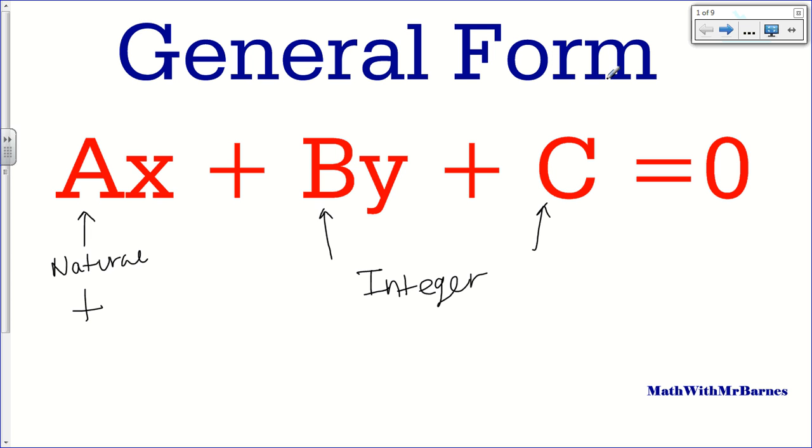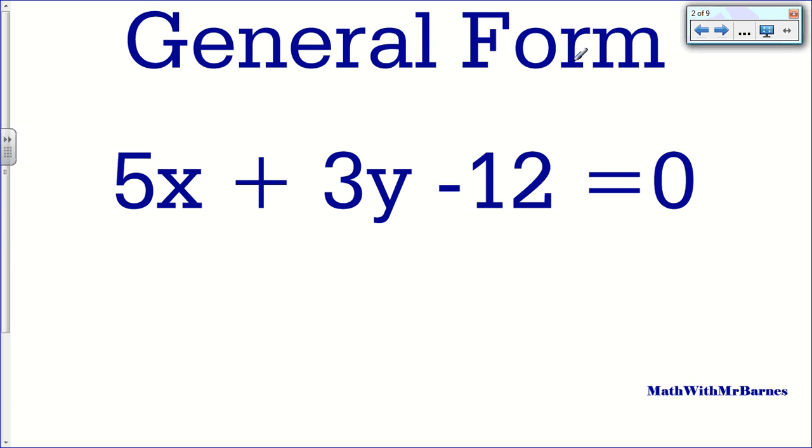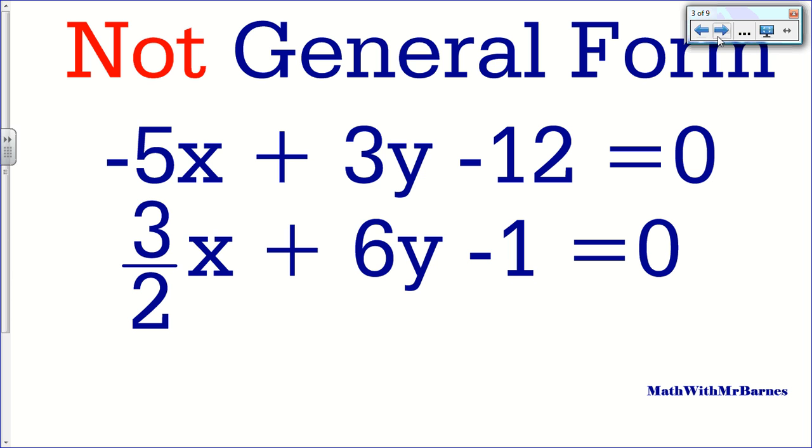Alright, so let's have a look at a few different examples of something that is general form and something that is not general form. So this guy is general form. The leading number in front of my x is positive and it's not a fraction or a decimal. And the other two are not fractions or decimals but one of them is negative, that's no big deal. And then it equals zero. The other two I have here, these are not general form. So this has a negative in front of my x, cannot have a negative in front of your x. The number in front of your x, your A value must be positive. And then here I have a fraction in front of my x.